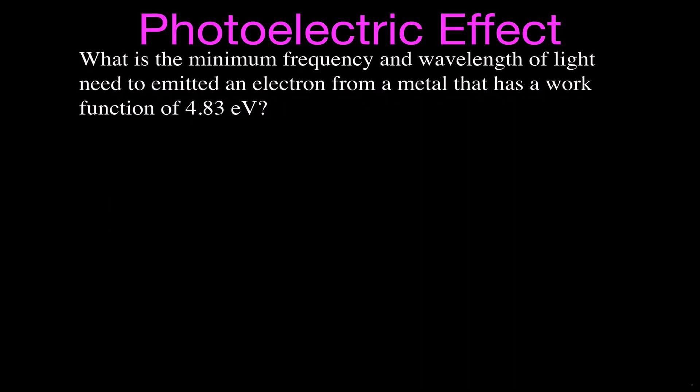But in this video, this is the problem we're going to be working on. It says, what is the minimum frequency and wavelength of light needed to emit an electron from a plate of metal that has a work function of 4.83 electron volts?